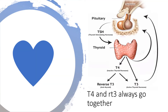You're all familiar with the hypothalamic-pituitary axis, but sometimes questions involving up and down arrows include reverse T3. You might confuse this with T3, but they are completely different. When the thyroid produces T4 and some T3 — T4 being the predominant hormone — it gets converted into T3 (the active form) and reverse T3. Whenever T4 is high, reverse T3 is also high, regardless of the level of T3. So T4 and reverse T3 always go together.